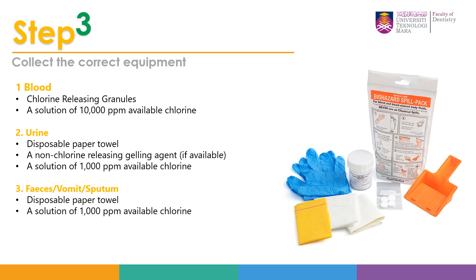Step number three, collect the correct equipment. For blood, get chlorine-releasing granules or a solution of 10,000 ppm available chlorine. For urine, you may use disposable paper towels, a non-chlorine-releasing gelling agent if available, and a solution of 1,000 ppm available chlorine. For feces, vomit, or sputum — which is quite common in dental clinics — use disposable paper towels and a solution of 1,000 ppm available chlorine.